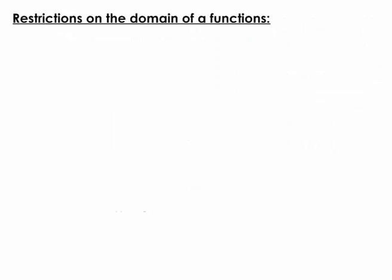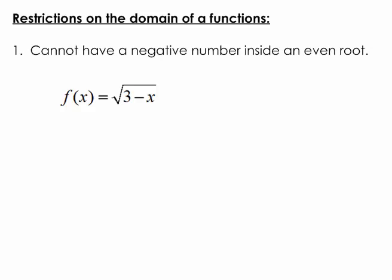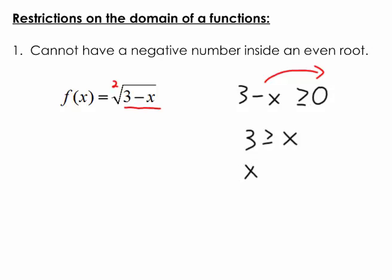What about restrictions on the domain of a function — values it cannot be? One particular function that always has a restriction is the square root. Remember, we don't write the 2 for a square root. Under the square root, we cannot have a negative value. So the expression underneath must be greater than or equal to 0. Solving, we get x is less than or equal to 3. So any number smaller than or equal to 3 would work in that function.